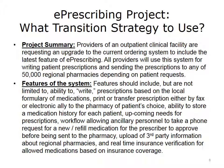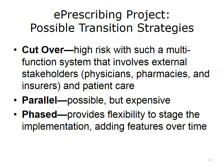Consider the pros and cons of each transition strategy for this example. Keep in mind that the three strategies can be used in various combinations. The transition must be handled carefully — after all, patients are counting on getting their prescriptions filled accurately and on time. The system interacts with many physicians and pharmacies, as well as patients, so the transition must go smoothly. Choosing a cut-over could carry high risks for a multifunction system that involves external stakeholders and patient care. A parallel operation can be very expensive and difficult to coordinate. A phased approach would provide a lot of flexibility to stage the implementation, adding features over time — this is probably the best bet given the prescribing system's multifunction nature.